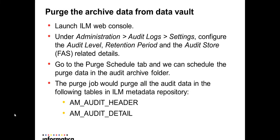In today's video, we saw how to run an archive log — the archive job and data vault loader job — for the audit logs, and how to see the data loaded into the data vault. Subsequently, we ran a retention policy for the AM Audit Detail and AM Audit Header table, which contain the audit log information. Then we ran a purge job, which deleted the records based on the retention policy that was set.